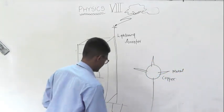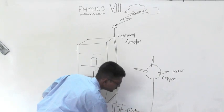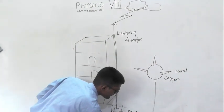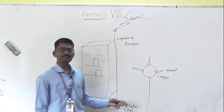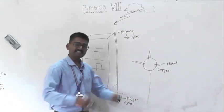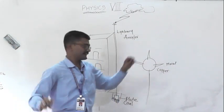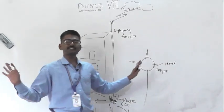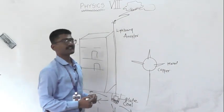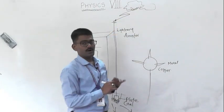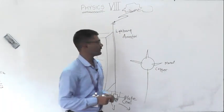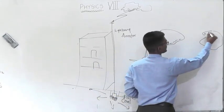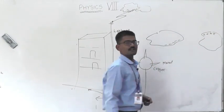Inside the earth below the lightning arrester, there is a huge metal plate buried in the ground. There is also coal around it. The coal easily discharges the charges into the ground. So all the negative charges pass through the copper lightning arrester, through the metallic strip, into the earth, and then into the metal plate surrounded by coal, which discharges everything and returns to normal state.